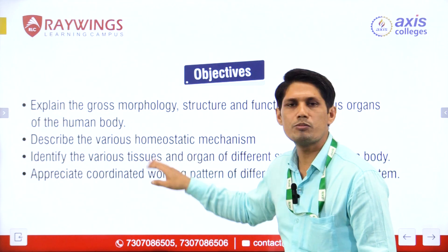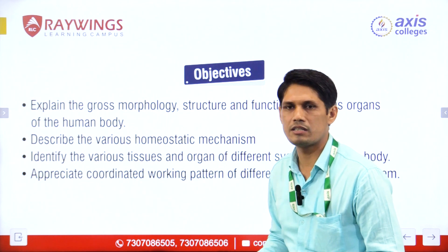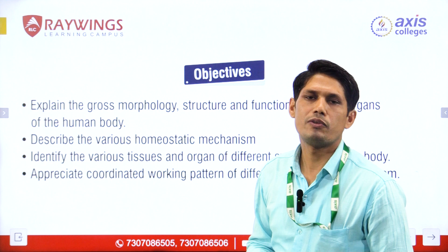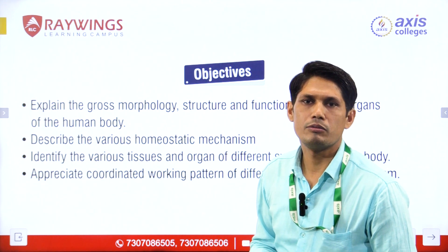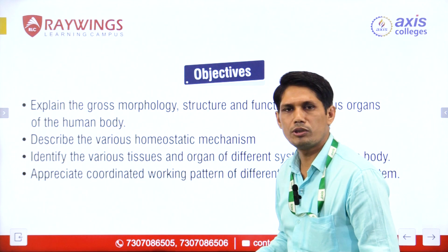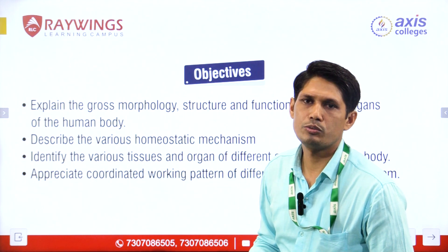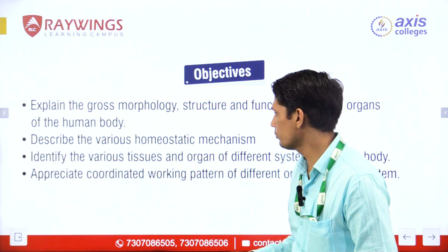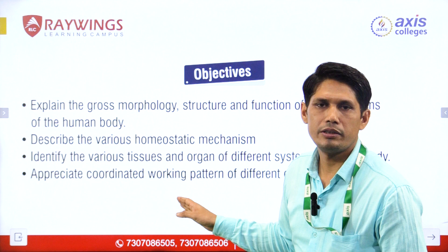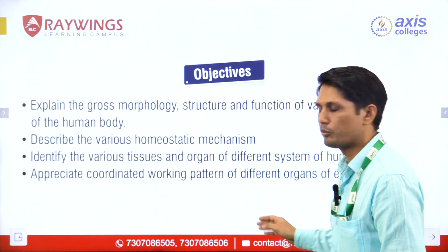Homeostasis: homeo means constant or fairly constant, and stasis means state. It is defined as the tightly controlled fluctuation and variation within the body. Also covered are the various types of tissues in the human body — connective tissue, epithelial tissue, muscular tissue and nervous tissue — and the working pattern of organs at different levels.